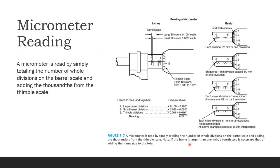For a metric micrometer, each division is 0.5 millimeter or one revolution, and small staggered divisions represent half a millimeter or one revolution. When you use the micrometer in the lab you will get a hold of reading it — don't worry about it right now.